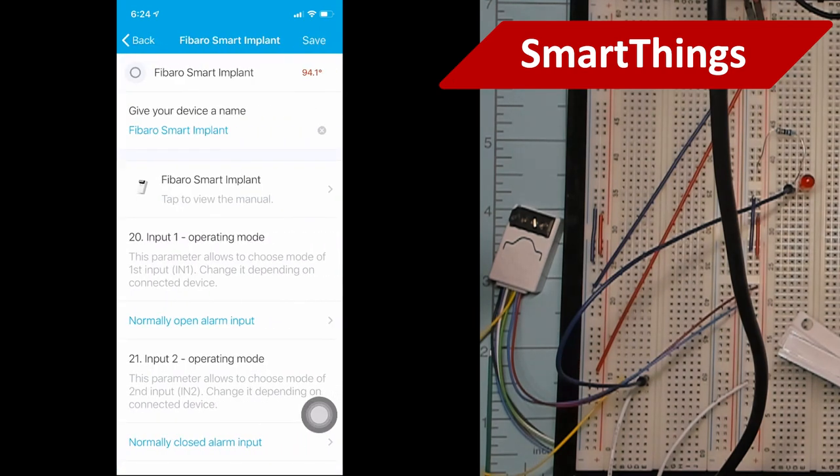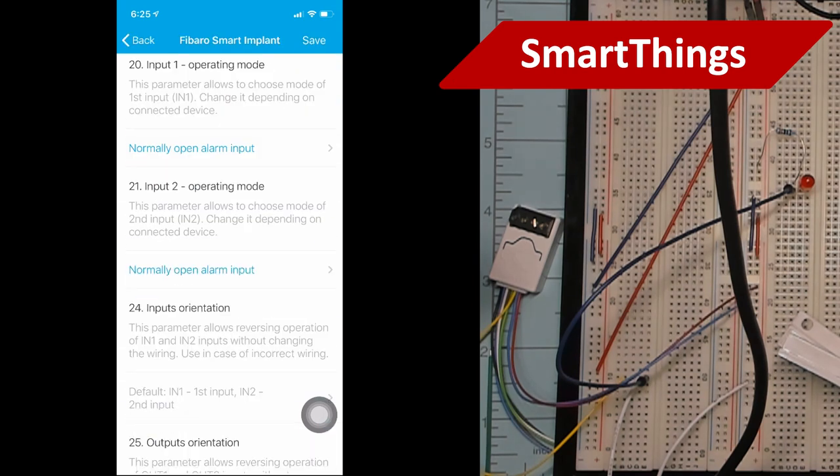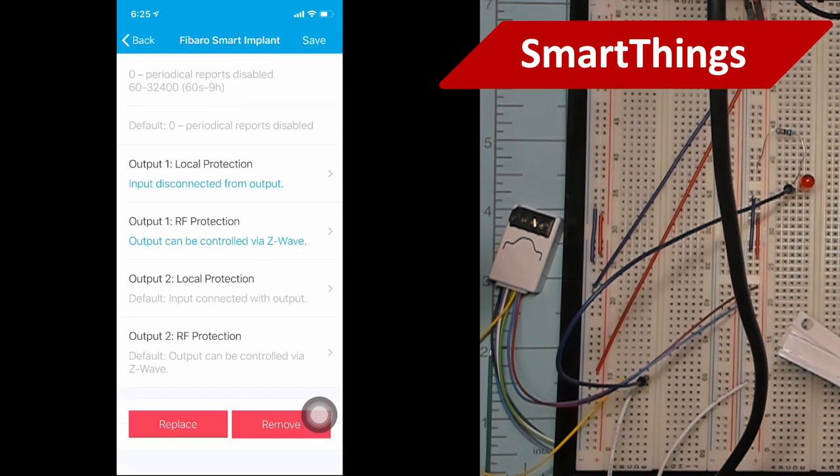Then click on the setup gear. Set the parameter for input one to either normally open or normally closed alarm input. Whichever matches your style of contact sensor that you're monitoring. Then press save.